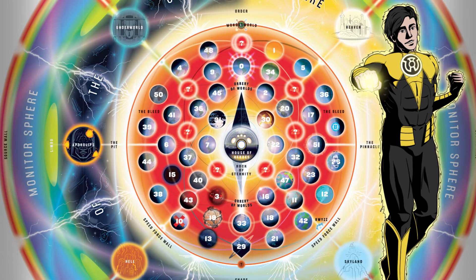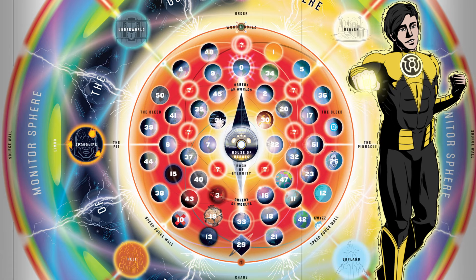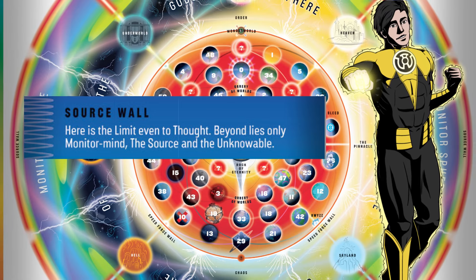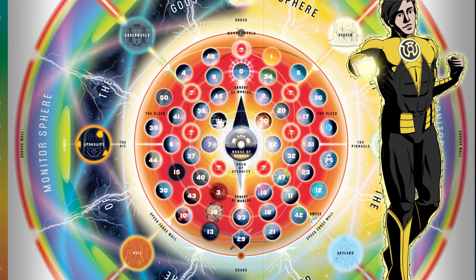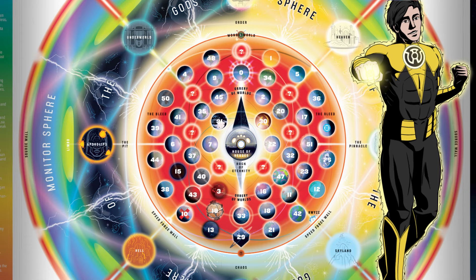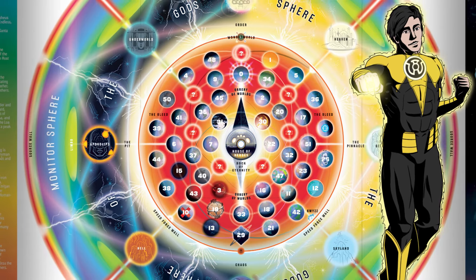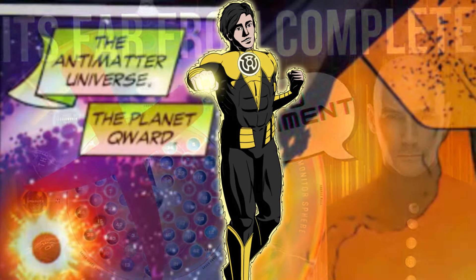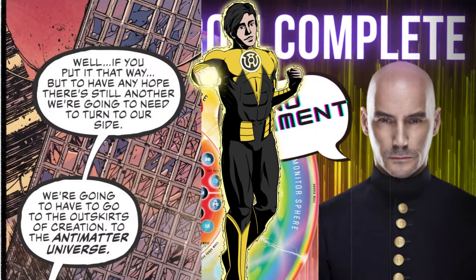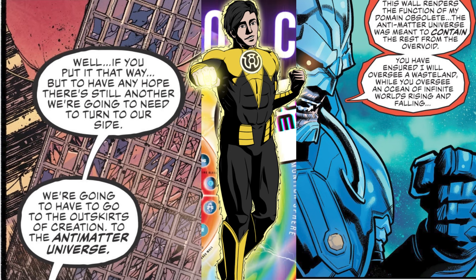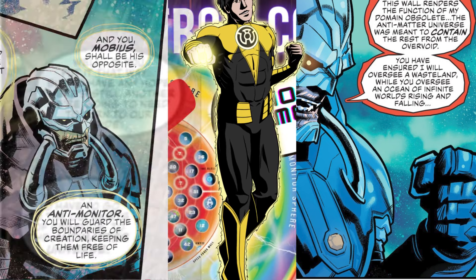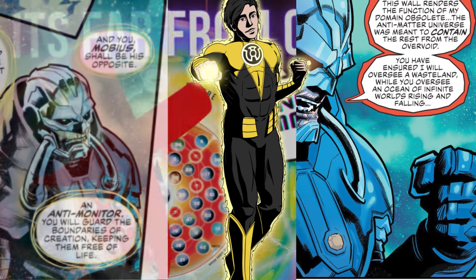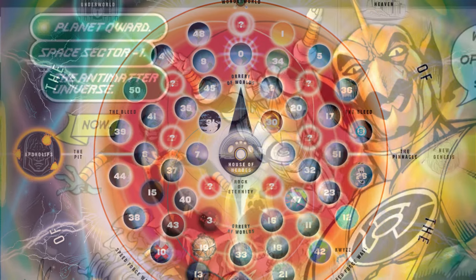Everything you see on this map is just the positive matter multiverse — everything that exists on the positive side of things. As stated before, beyond lies only the Monitor Mind, the Source, and the Unknowable — though that's all outdated information we'll come back to. So if everything we're looking at is a positive matter existence, what other existences are there within our creation? Let's talk about those because they're entirely missing from this map too. Starting off with my personal favorite: the anti-matter universe. The anti-matter universe is comparable to the entire positive matter universe, and its original purpose was to create a final layer to existence where nothing could escape into the Overvoid — according to the guy who governs over the entire thing, the Anti-Monitor.